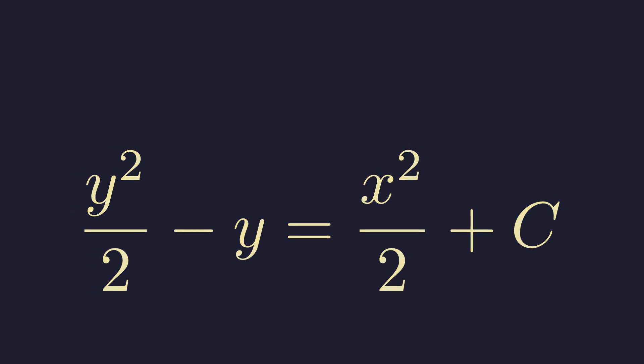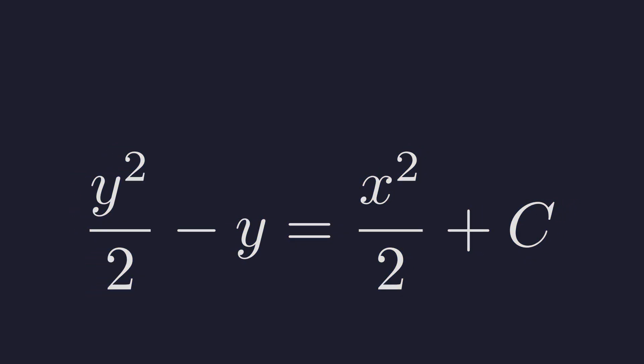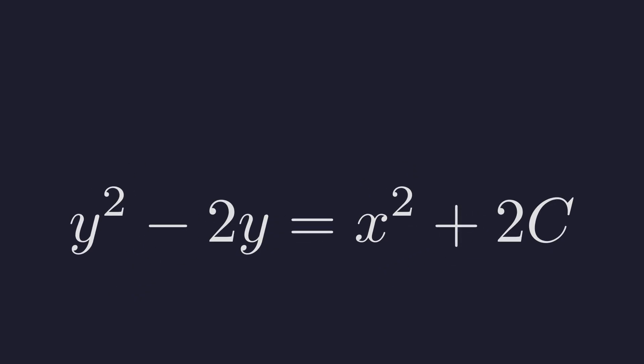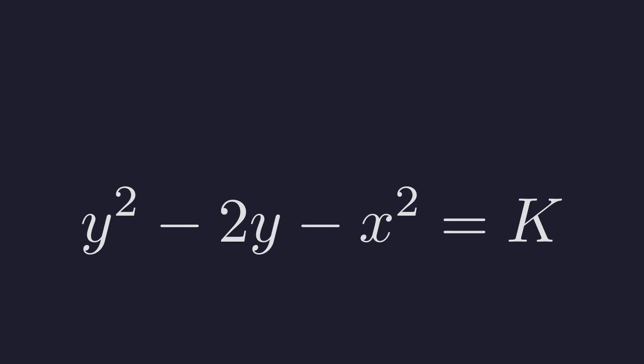To simplify this expression, we can multiply the entire equation by 2 to eliminate the fractions. This results in y squared minus 2y equals x squared plus 2c. Since c is an arbitrary constant, 2c is just another constant. We'll relabel it for simplicity. We'll call it k and move the x squared term to the left side.